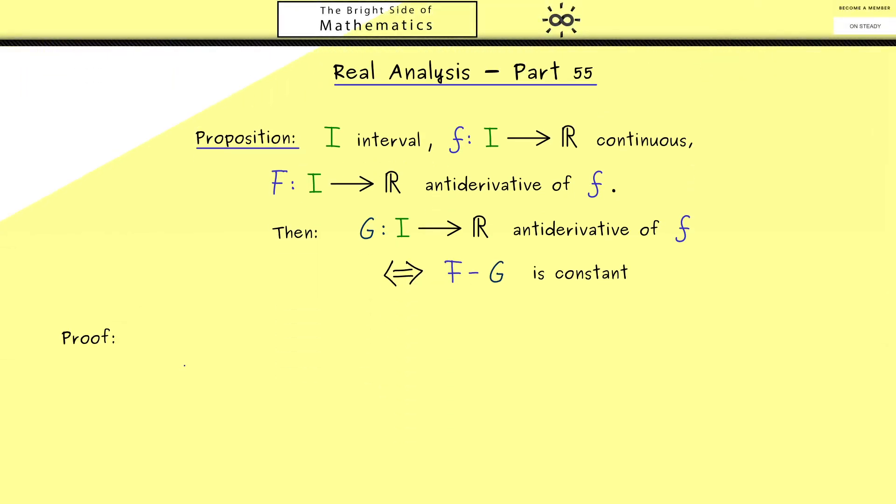Because we want to show an equivalence, the proof consists of two parts. So we just start with the first implication from left to right. Therefore the assumption is now that we have two antiderivatives given, and then we just need to look at the difference function here and show that this is constant. Now because we talked a lot about finding local extrema, you know being constant means that the derivative is zero. This argument works because we know the antiderivatives are differentiable.